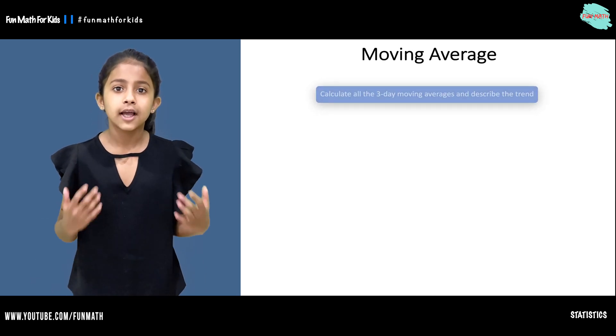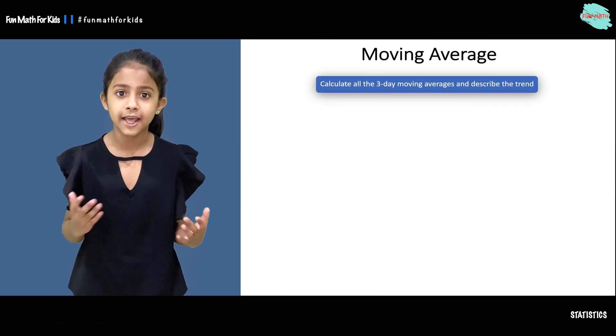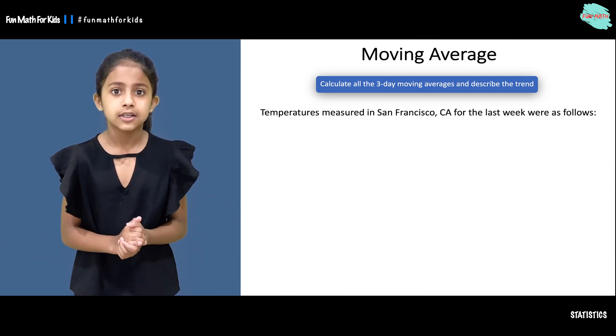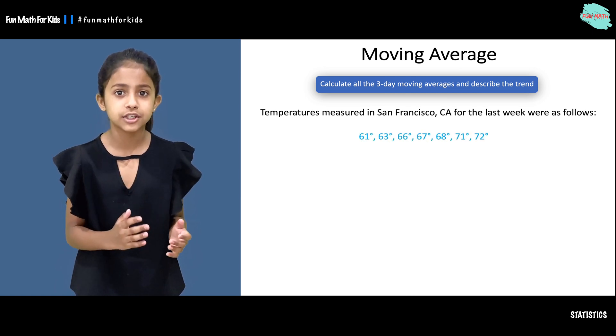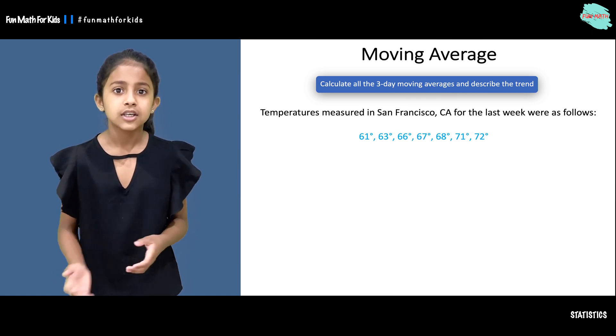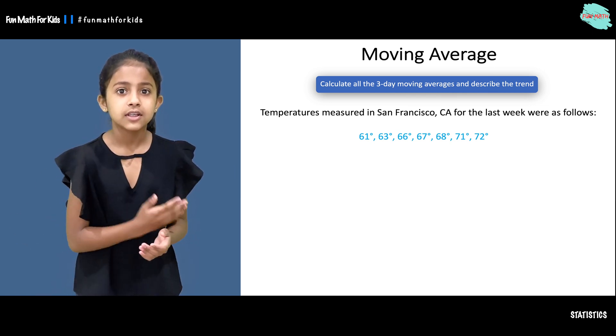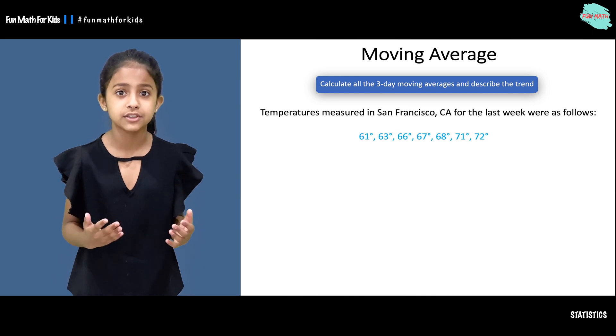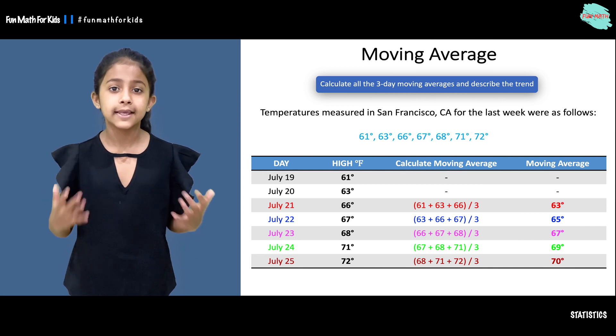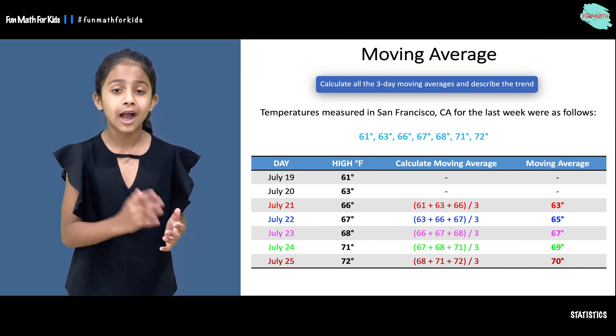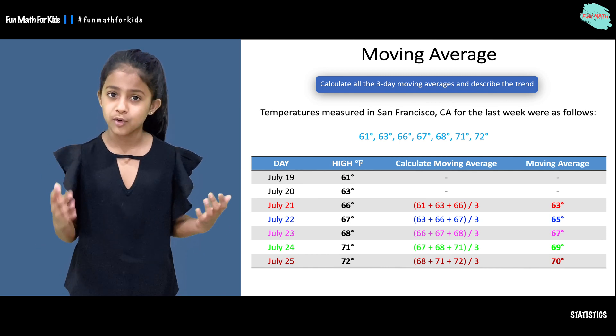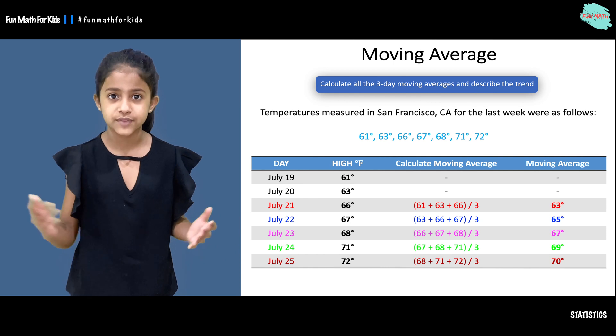Now let's see how to calculate the three day moving averages and describe the trends. Here we have the temperatures measured last week in San Francisco, California. We have the seven day high temperatures measured in Fahrenheit. In our table we have days, high temperatures measured in Fahrenheit, how to calculate moving average, and moving average values.